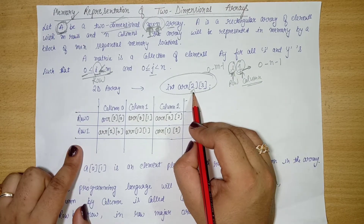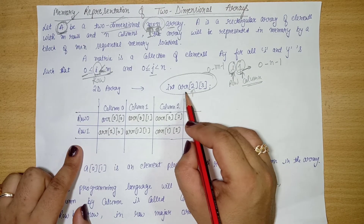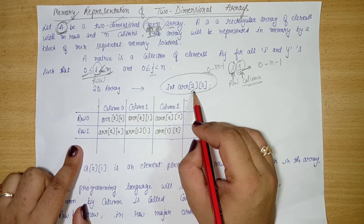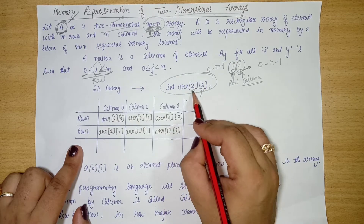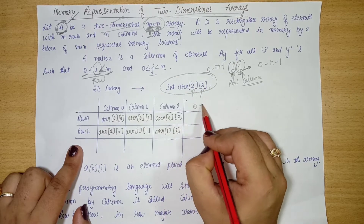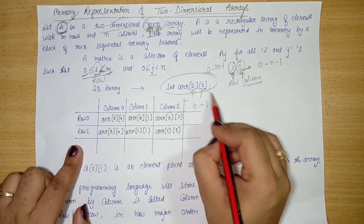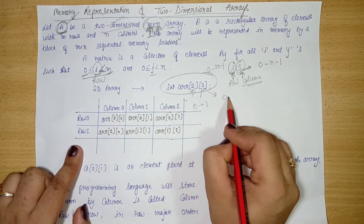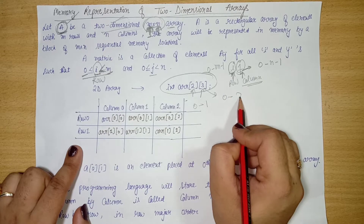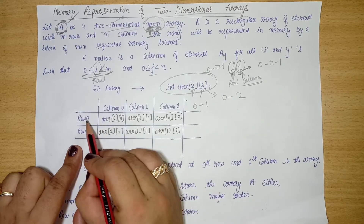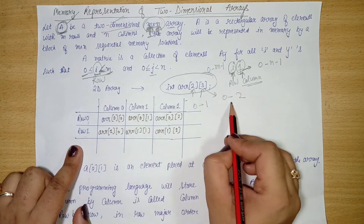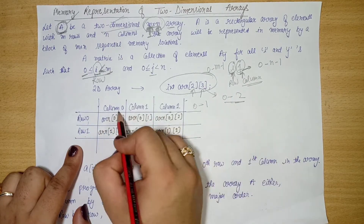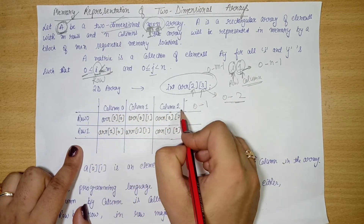For example, if there is an array where the size of row is 2 and the size of column is 3, the range of i will go from 0 to 1, and the range of j will go from 0 to 2. So the row indices are 0 and 1, and the column indices are 0, 1, and 2.